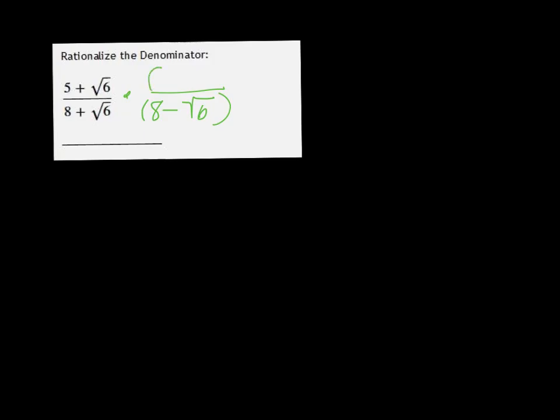What happens when we do this is that we will get rid of those radicals. So we just have to FOIL it out.